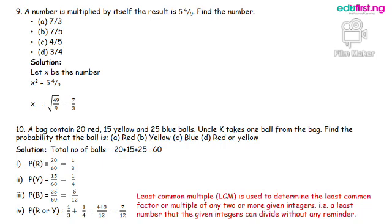That is 5 multiplied by 9 plus 4, which will give us 49. So we have 49 over 9. When we square root them, we have 7 over 3. That is 49 being square rooted will give us 7 and 9 being square rooted will give us 3. So the number we are looking for is 7 over 3. And the correct answer is option A.